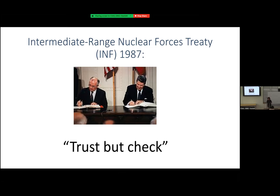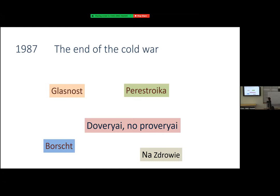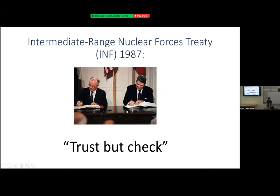Back to 1987. The saying doveryai no proveryai — everybody knew what that meant. It meant trust but check. The reason it was so important is it was the philosophical basis behind the INF Treaty, which Gorbachev and Reagan signed — we're all going to get rid of our mid-range nuclear warheads. But you don't want to get rid of your warheads if the other team isn't getting rid of theirs. So: I trust you, but I get to check. By the way, this treaty is no longer — we found out they weren't holding it and we stopped the treaty.